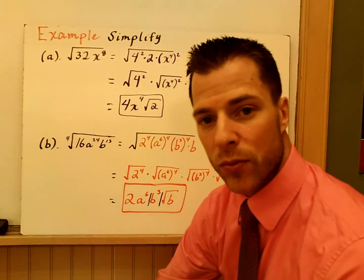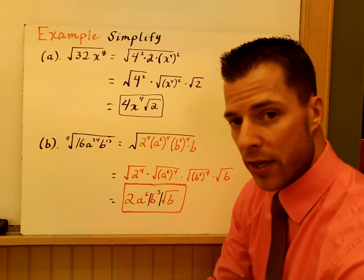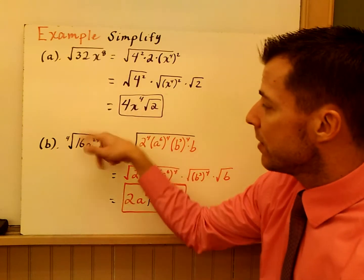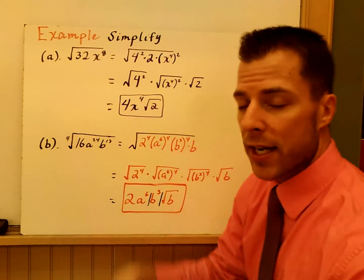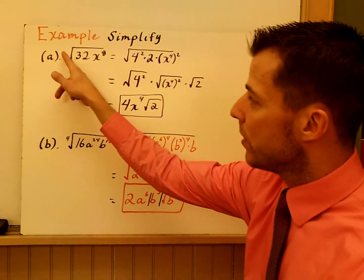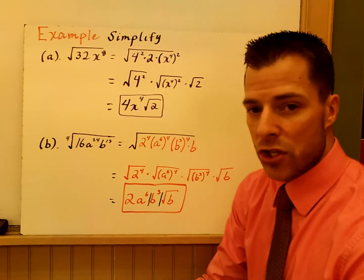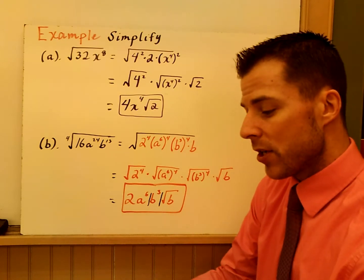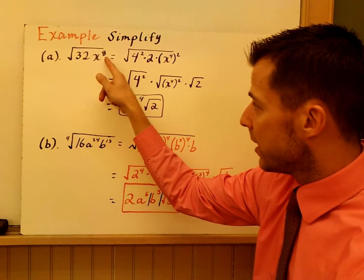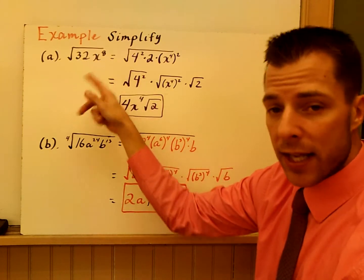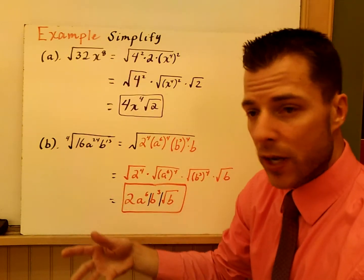There's nothing really new here — we're just putting these rules down on paper. Let's simplify these two expressions. We have the square root of 32x to the eighth. There's no index written, so it's the square root. What the two essential knowledge pieces are really talking about is being able to break this up. If I can write anything that has a second power to match my index, that's what I want to do.